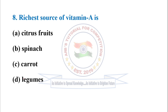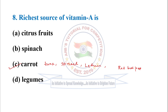Question number eight: richest source of vitamin A is? The correct answer is carrot, option C. Other sources include tuna, spinach, lettuce, red bell peppers, etc.